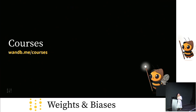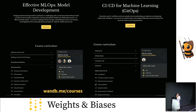We also believe that machine learning should be accessible to everyone, and learning machine learning should be free. So we've been creating all of these different courses to help machine learning engineers learn to put their models in production. In these courses, we share best practices that we have learned from working with some of the best machine learning teams for years. You can find them at oneb.me/courses.